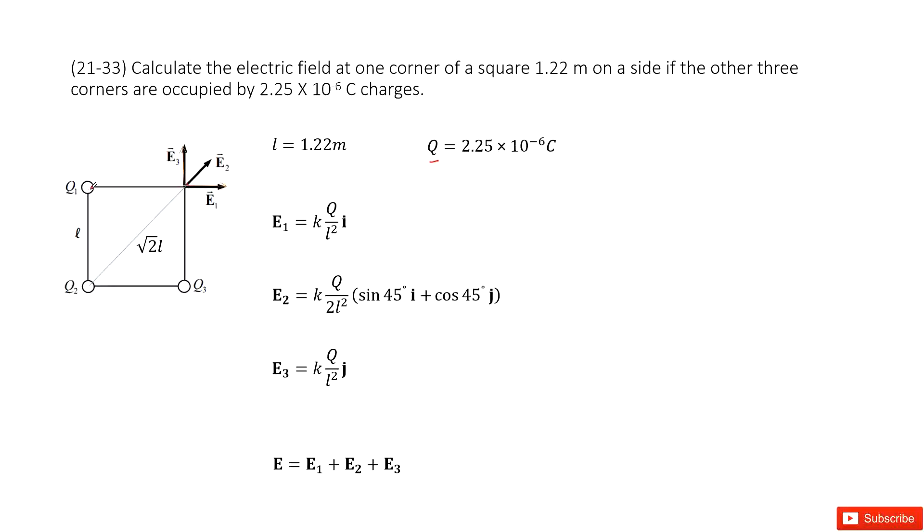We look at Q1, it is radially outward, horizontal to the positive x-direction. The distance between Q1 and the location is just L, so we can write it as kQ/L² i.